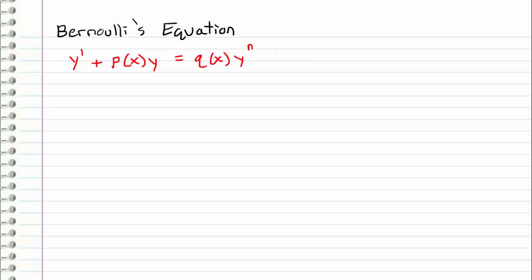Hey guys, so this is going to be the final type of first-order differential equation that we are going to go over, and that is called the Bernoulli equation. The Bernoulli equation is of this form right here. It looks pretty similar to the very first form that we considered, except it has this term attached to the right-hand side. This is a non-linear term because we have y to the nth power, which makes the whole differential equation non-linear.